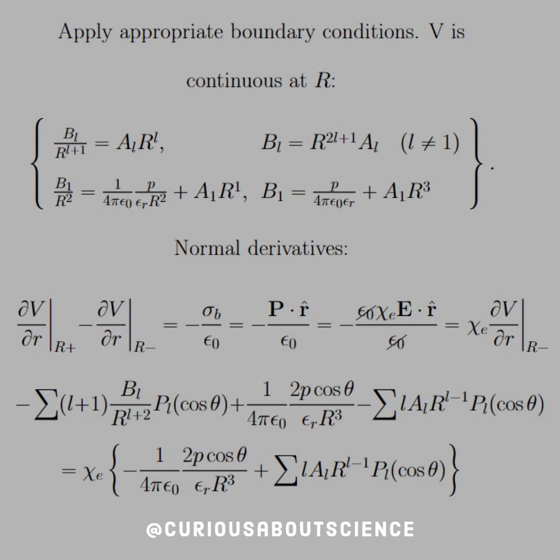So like with all our other boundary value problems, we need to apply a couple of different conditions, namely the continuity at the boundary R and the normal derivatives. Here we see that we have two cases. Because that initial potential had cosine in it, we're going to have a case for L not equal 1 and for the case of L equal 1, which we've seen in plenty of other problems.